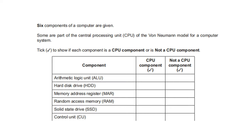Six components of a computer are given — tick whether each is a CPU component or not a CPU component in the von Neumann model. ALU (arithmetic and logic unit) — CPU component. Hard disk — not a CPU component. MAR (memory address register) — CPU component. RAM (random access memory) — not a CPU component. SSD (solid state drive) — not a CPU component. CU (control unit) — CPU component.